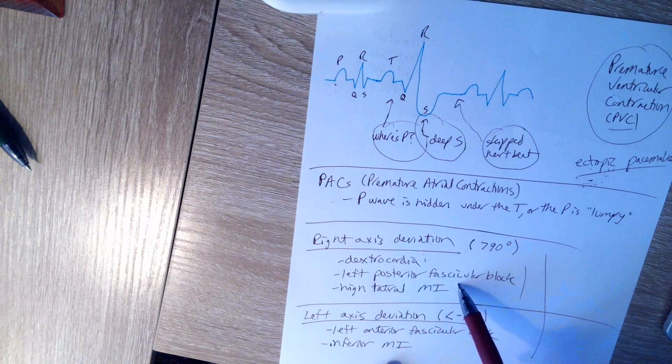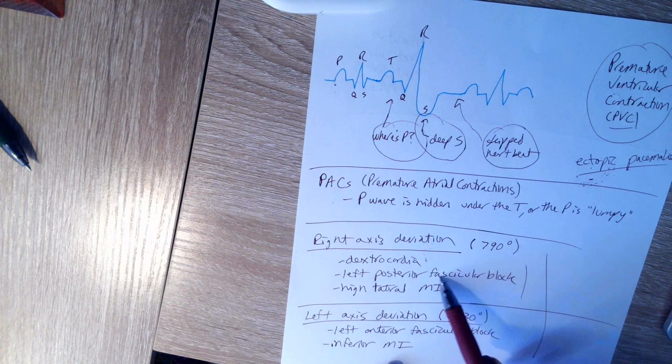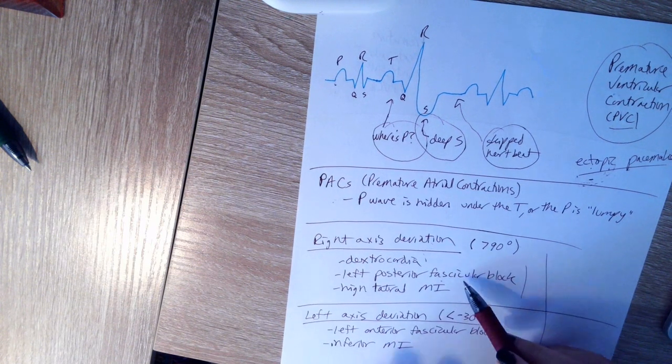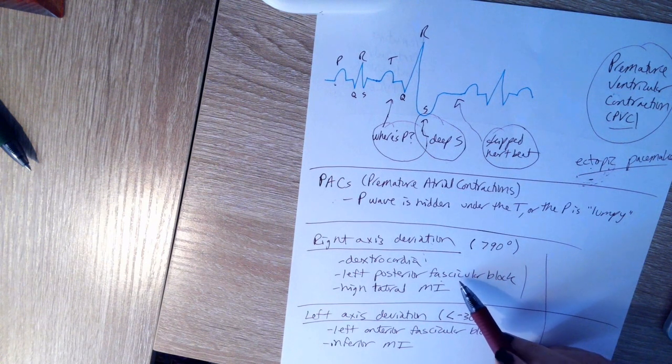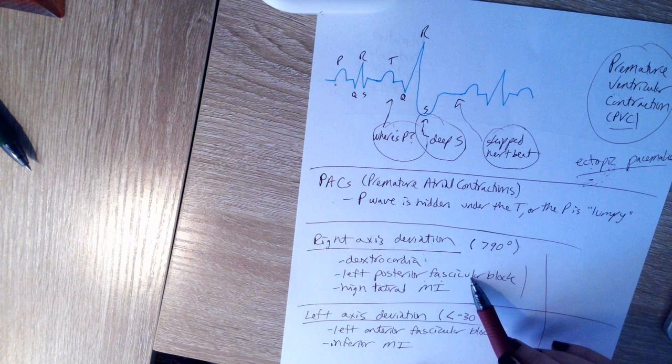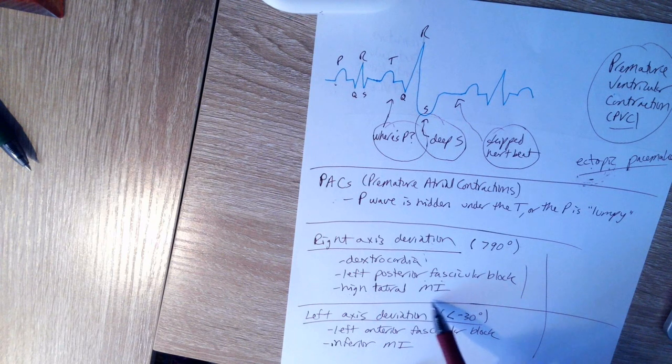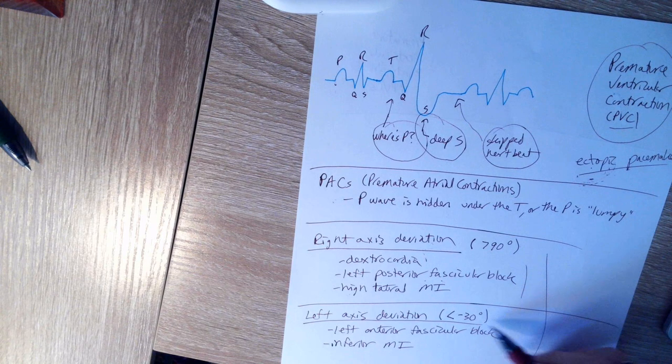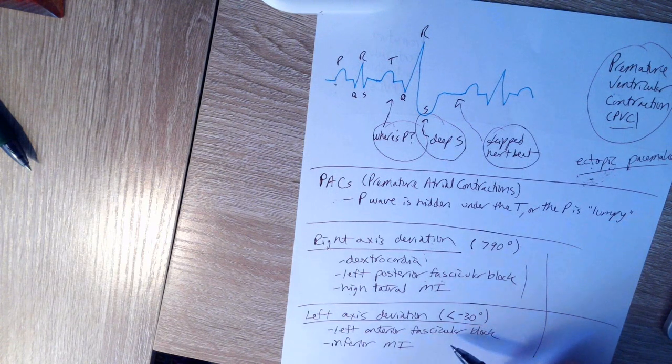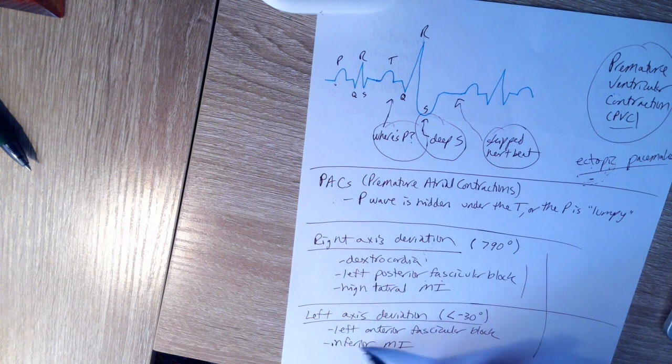It could also be due to a left posterior fascicular block. This is referring to the fasciculi of axons that are going to the back of the left ventricle. So if you're thinking like to the conducting system, to the AV branches, and then through the AV branch, and then the bundle branches, and the Purkinje fibers going out into the ventricles, you're having a block there. Going to the back of the left ventricle. Or it could be referring to a high lateral myocardial infarction, or a heart attack happening high up on the side of the heart. For a left axis deviation, so a very low mean electrical axis, that could be a left anterior fascicular block. So same idea, block conducting to the front left side of the left ventricle. Or it could be a heart attack happening down low.